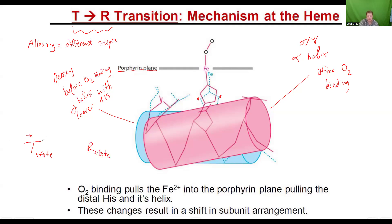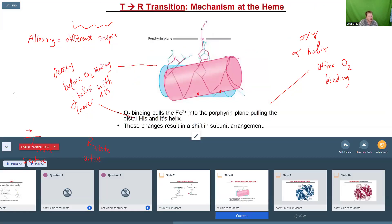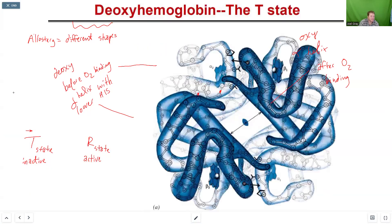The T-state of an allosteric protein is the inactive form, whereas the R-state is your active form. There are lots of different proteins that are allosteric proteins, and this is significant for how they behave. O2 binding is going to cause these conformational changes. On a grand scale, let's look at our T-state of our protein.